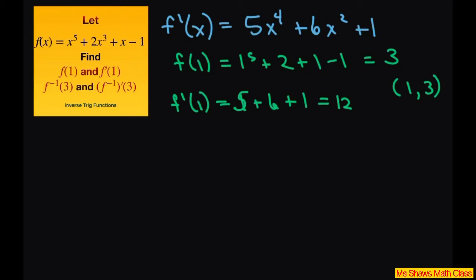Alright, so basically now they want us to do the inverse, f inverse of 3. So basically the graph includes the point on the inverse 1 comma 3, and the slope of the graph at 1 is 12, because that's your derivative.